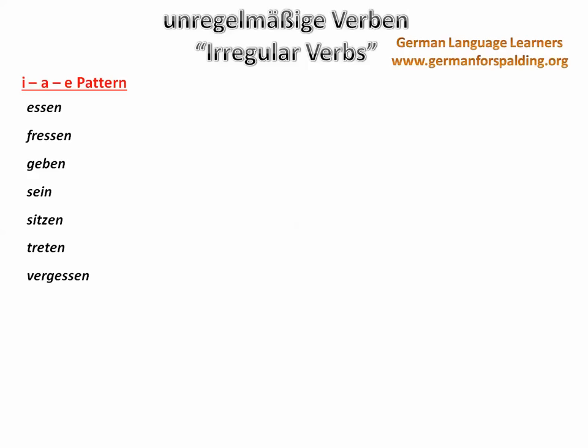Guten Tag. Today we're going to look at irregular verbs, or unregelmäßige Verben, in German. We're going to look at three categories of these verbs, and although this is not a complete list, it will give you a good idea of how irregular verbs operate in general.